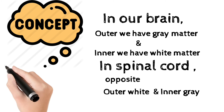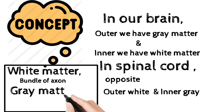So what is grey and white matter? White matter is a bundle of axons, and grey matter is a collection of cell bodies.